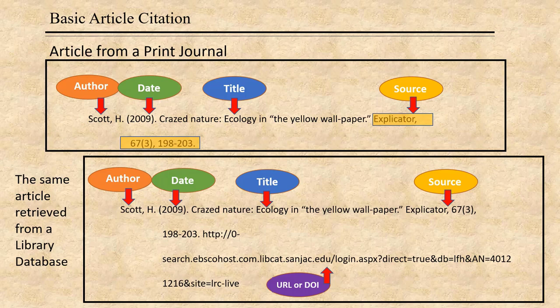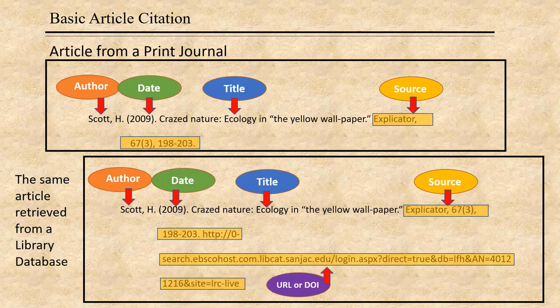The same article retrieved from a library database has exactly the same citation up until the source information. After the page numbers, there is the URL in this case, or the DOI if one had been provided.